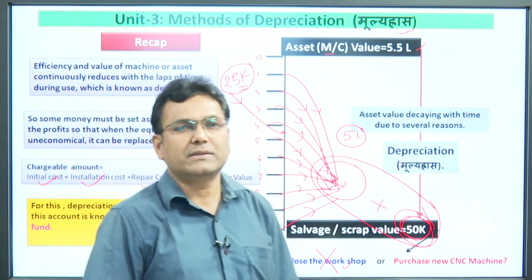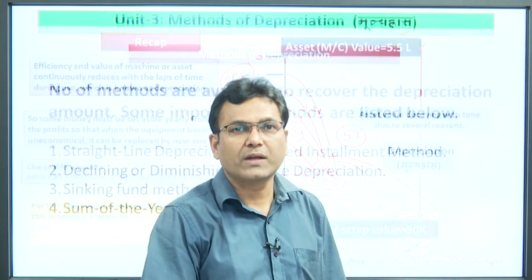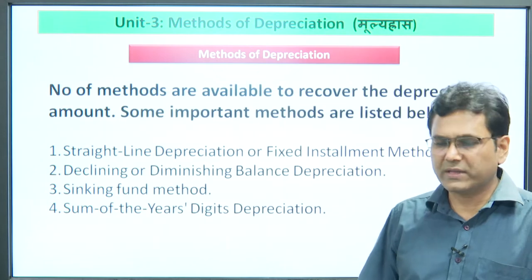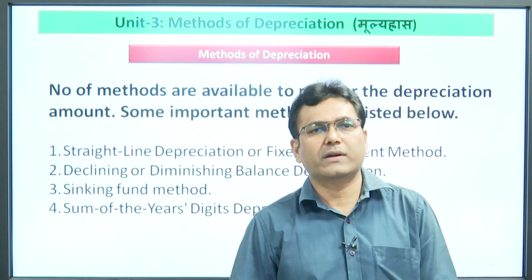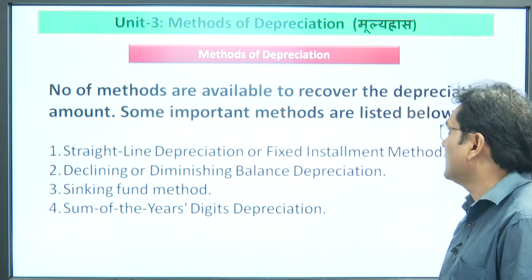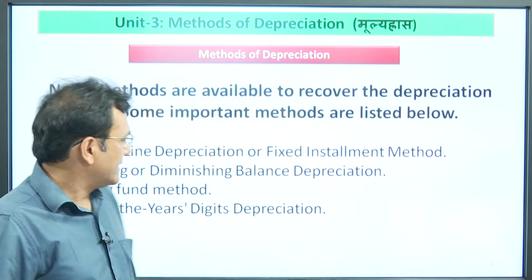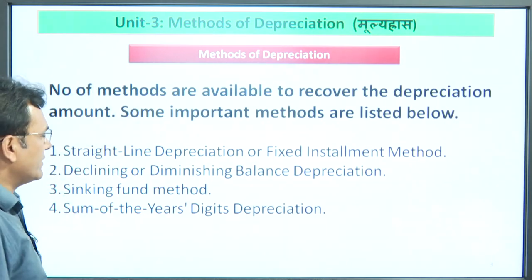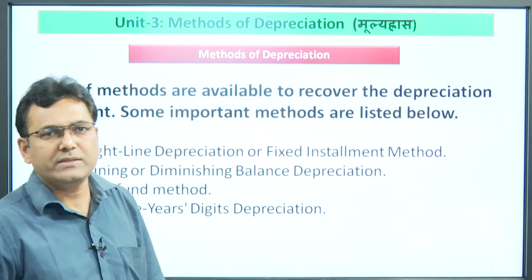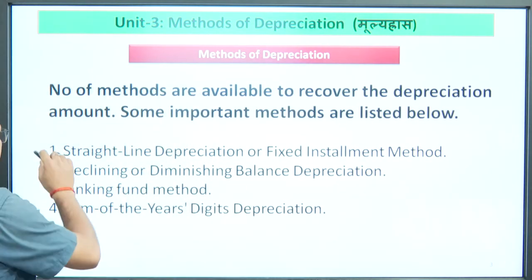Today we will look at depreciation with some problems to understand how to calculate the required depreciation amount. There are many methods available to recover the depreciation amount. The first and simplest is the straight line method, also called the fixed installment method. It is the simplest because it forms the base concept for more complex calculations. Since it is a straight line, the relationship is linear.